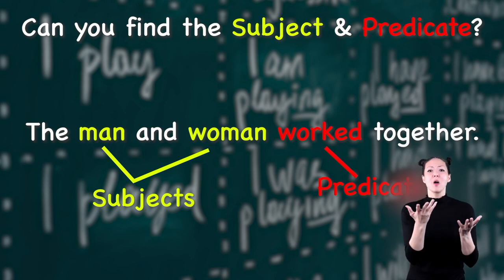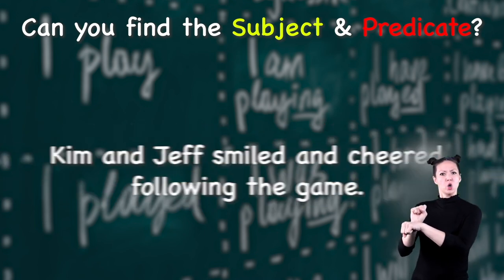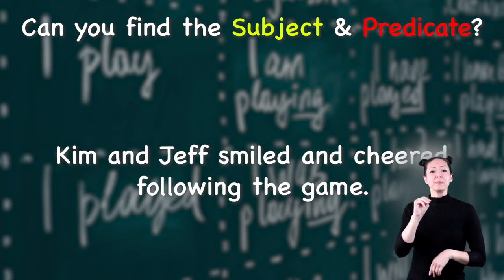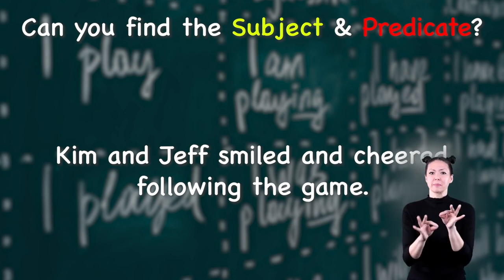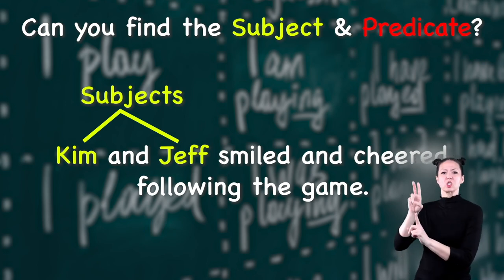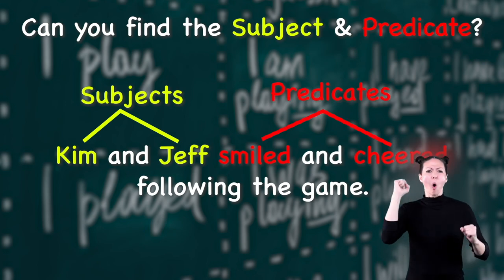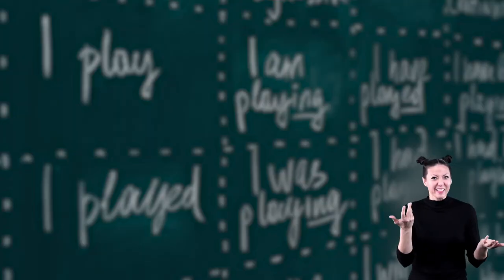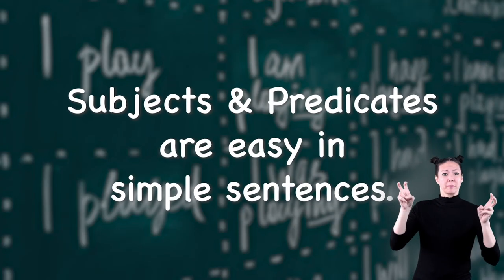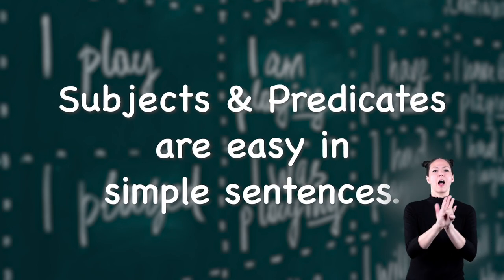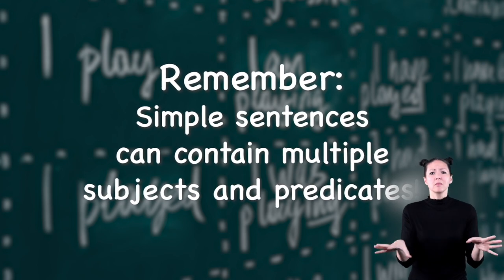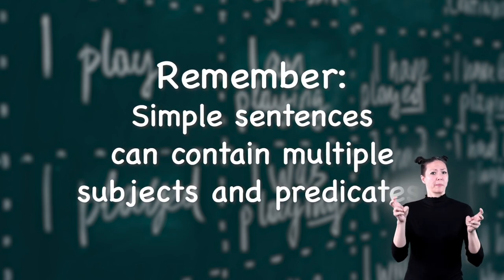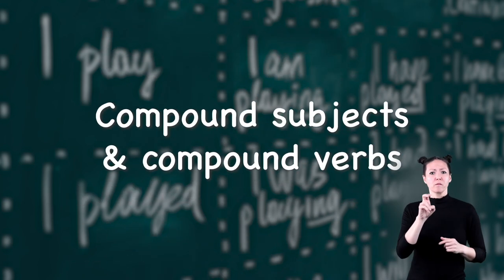How about 'The man and woman work together'? The subjects are 'man' and 'woman,' and the predicate or verb is 'worked.' One last example: 'Kim and Jeff smiled and cheered following the game.' In that simple sentence, 'Kim' and 'Jeff' are the subjects and 'smiled' and 'cheered' are the predicates. Hey, it must have been a good game! As you can see, the subjects and predicates are easy to identify in simple sentences.